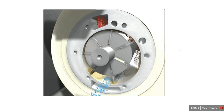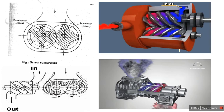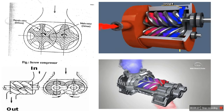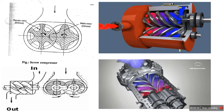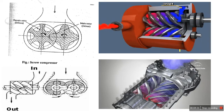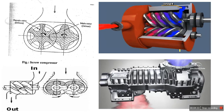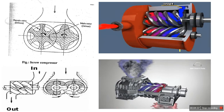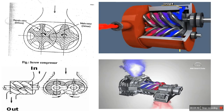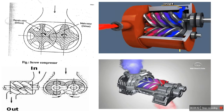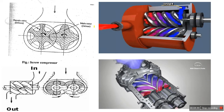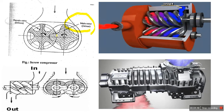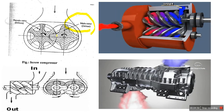Now we move to the screw compressor. The screw type compressor is a positive displacement compressor consisting of two mutually engaged helical grooved rotors housed in a casing. Of the two rotors, the male rotor is the driver rotor, and it is engaged with the female rotor, which is called the driven rotor.